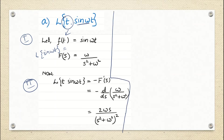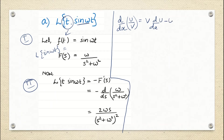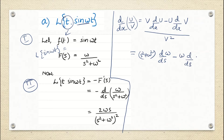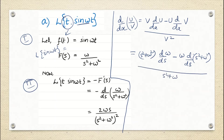That means minus d/ds of ω by (s² + ω²). After differentiation, whatever comes will be our answer. We know the general form of d/dx of u/v is: v·(d/dx of u) minus u·(d/dx of v), divided by v². In this case, v is the denominator s² + ω², d/ds of u where numerator u is ω, minus u·(d/ds of denominator s² + ω²), divided by v² which is (s² + ω²)².